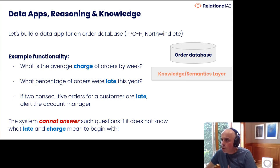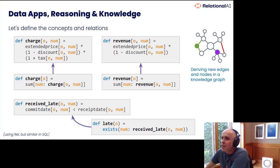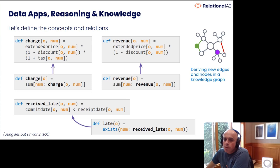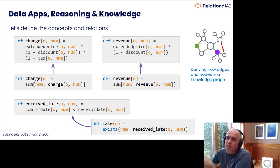This is a pretty common issue — data comes in that is partially computed, and you have to figure out the inconsistencies and what is real data versus not. In REL we're defining concepts for charges, being late, and revenue, defined for orders as well as line items. These definitions can be understood graph-theoretically: they introduce new edges and node labels into the graph. And these definitions form a dependency graph — very similar to what you see in dbt, Legend, or LookML.